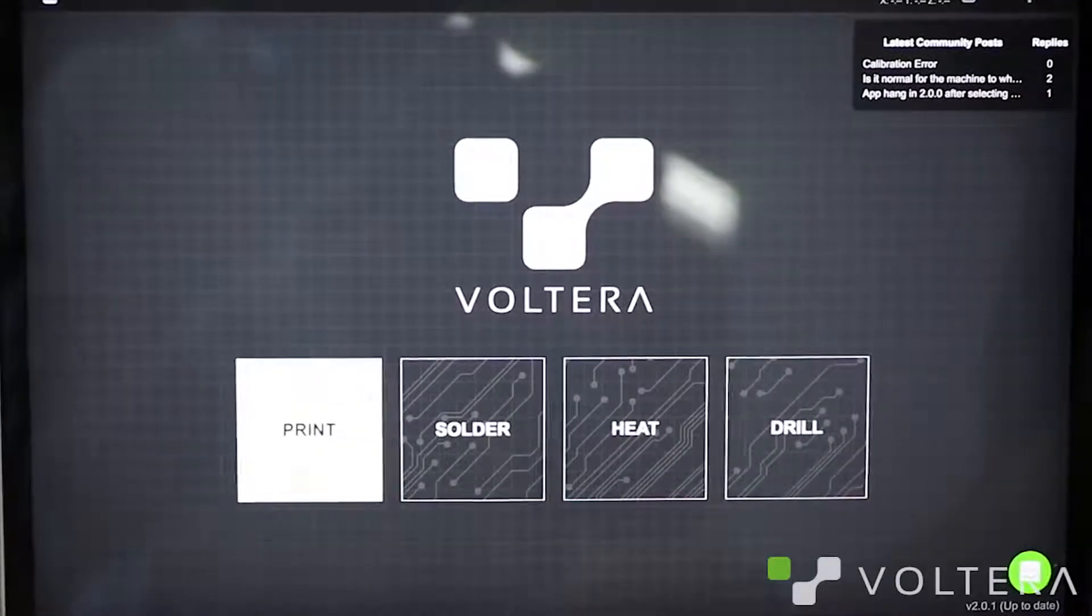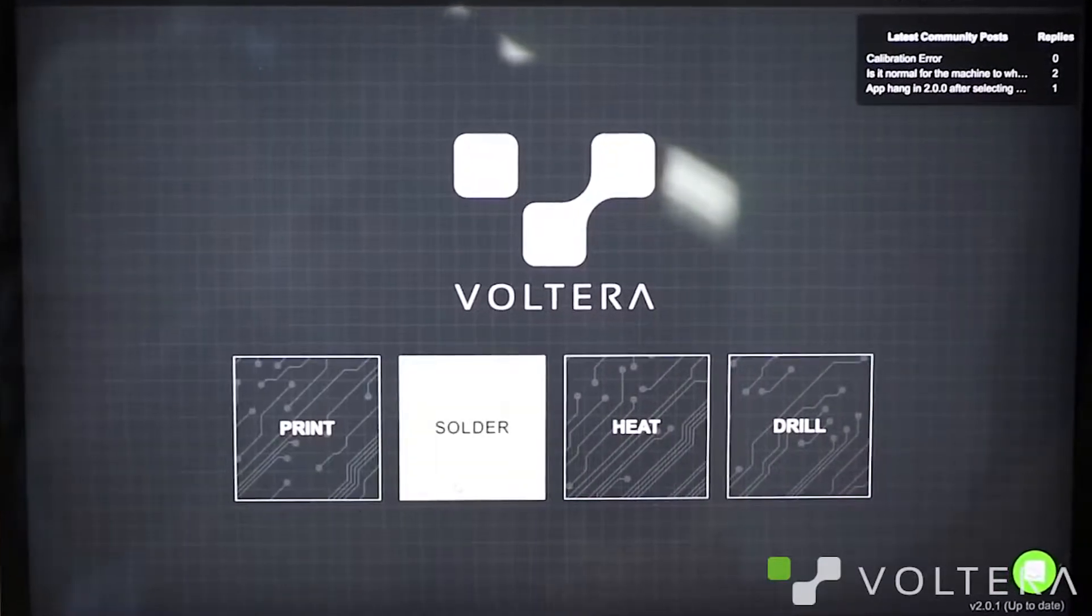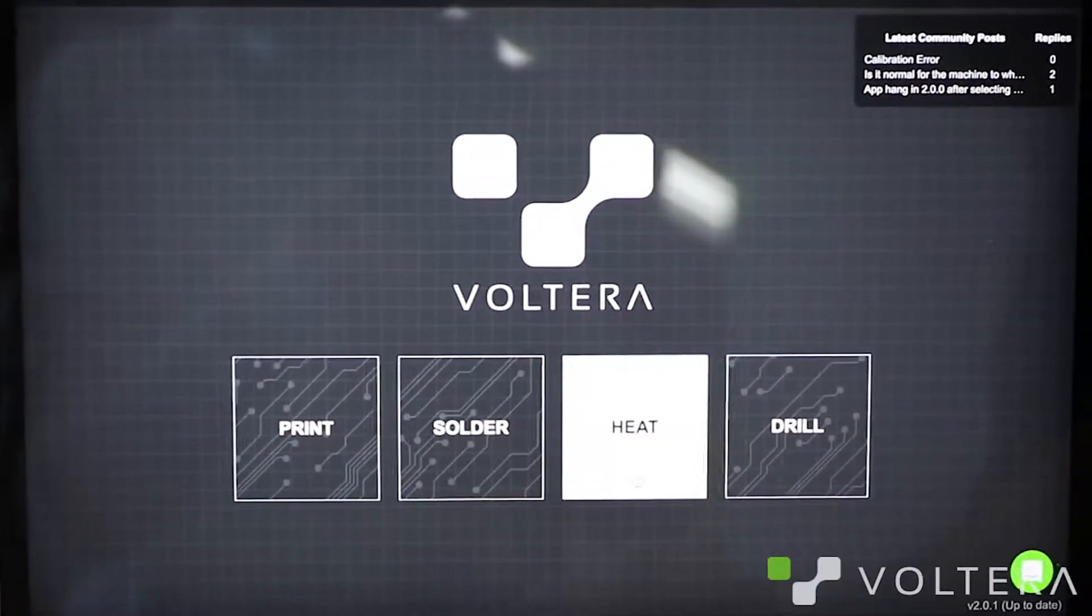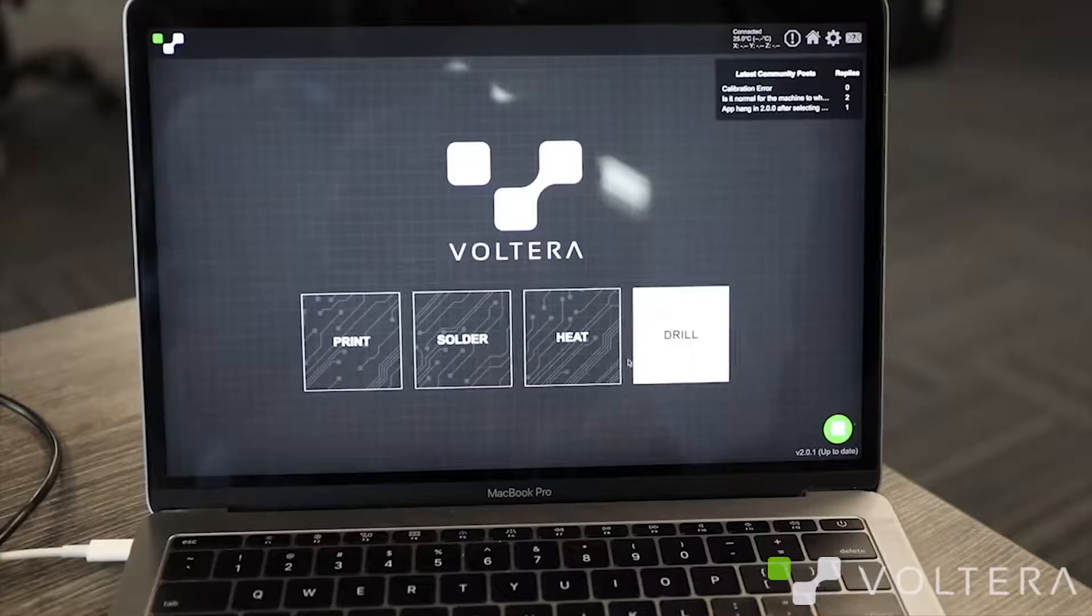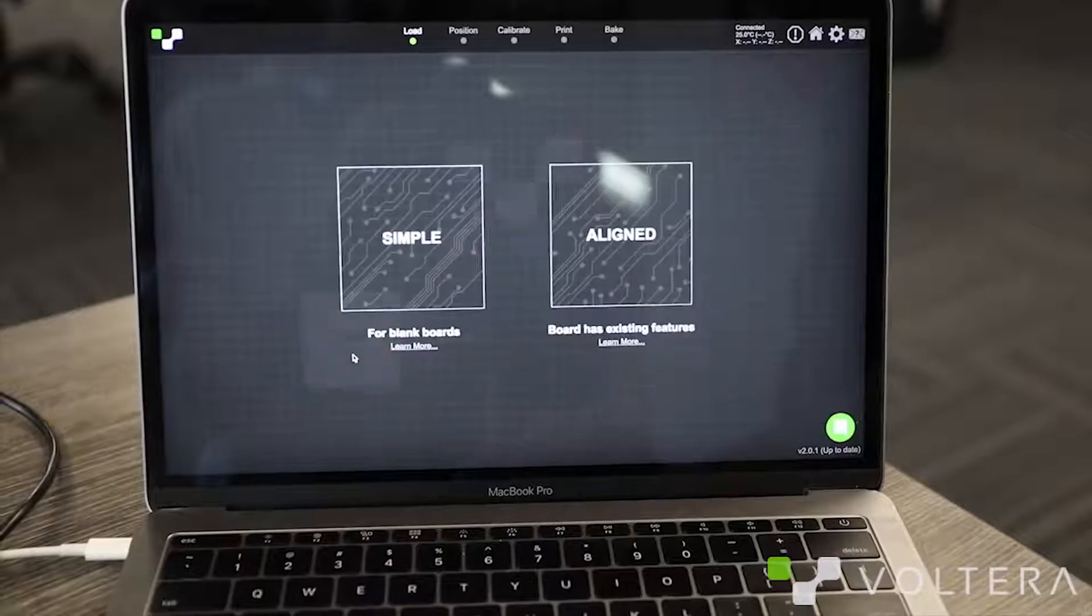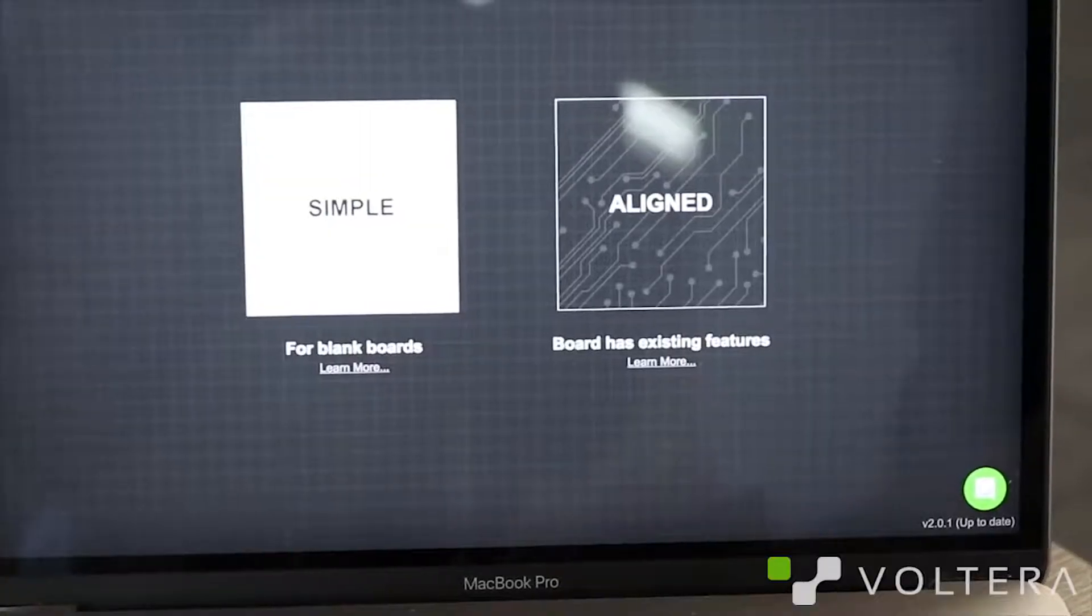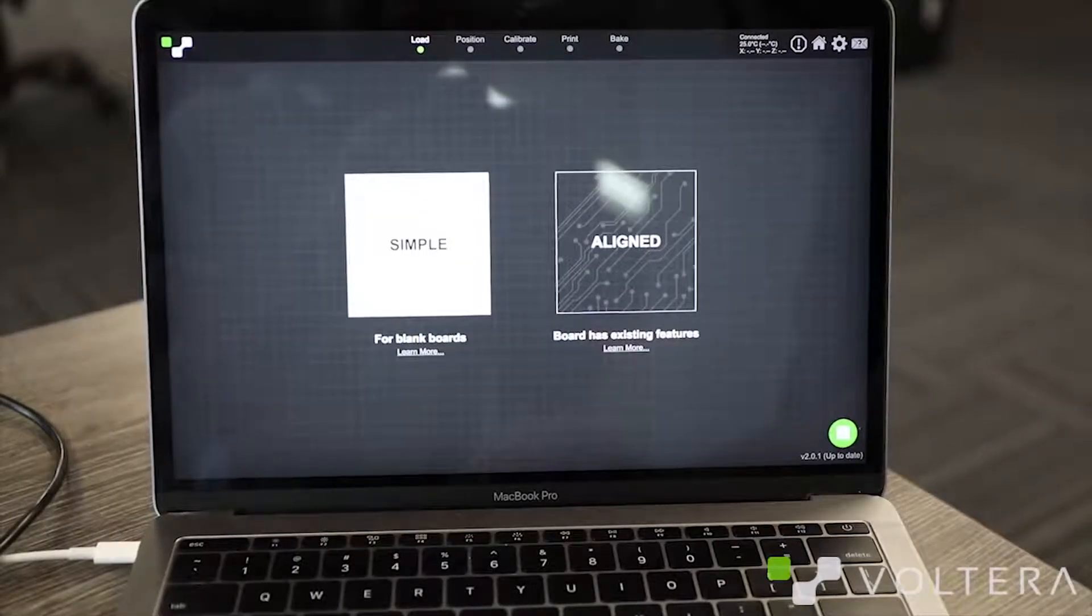Okay, so you'll see four options: print conductive ink, dispense solder paste, heat the bed to reflow components or cure ink, or drill to do through-hole components and vias. First things first, we need to print our design. You'll see two options here: simple and aligned print. Aligned is for boards with existing features like prefab boards. Since we're starting with a blank substrate, I'm going to pick simple.